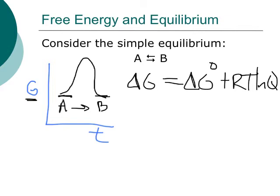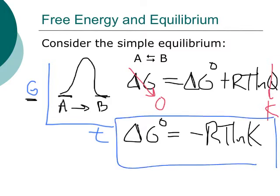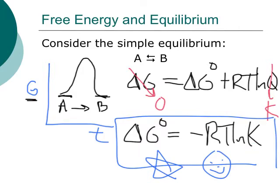Now if we're at equilibrium, a couple of things about this equation change. At equilibrium, delta G goes to zero, and the reaction quotient Q goes to K. So we have zero and K for those two terms. Rearranging, we get that delta G° is equal to negative RT ln K. This is a pretty important equation — it gives us an important connection between the standard free energy change delta G° and the equilibrium constant K at a particular temperature. R here is the gas constant, 8.314 joules per Kelvin. This is the overt connection between free energy and equilibrium.